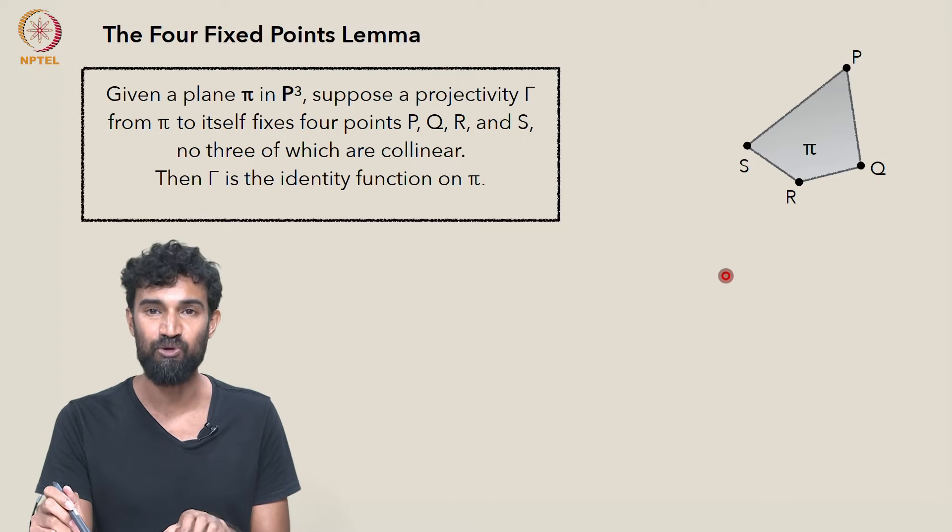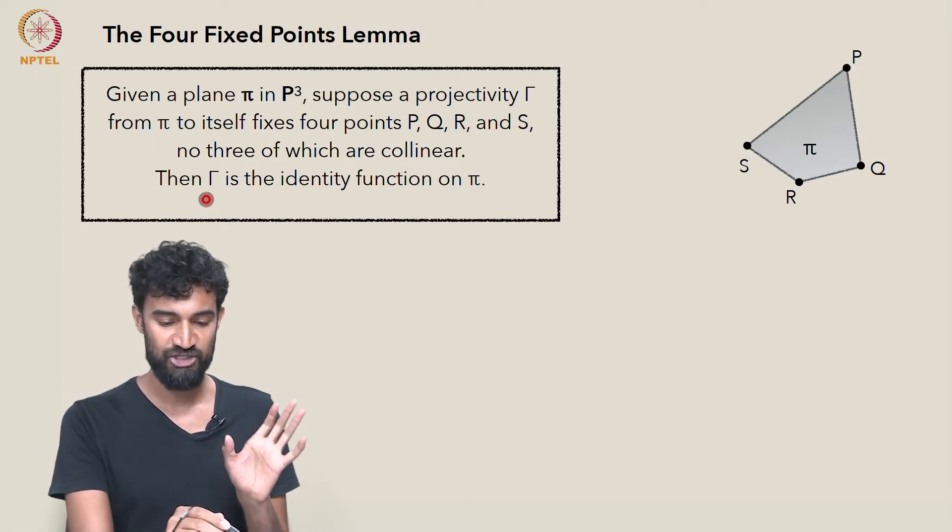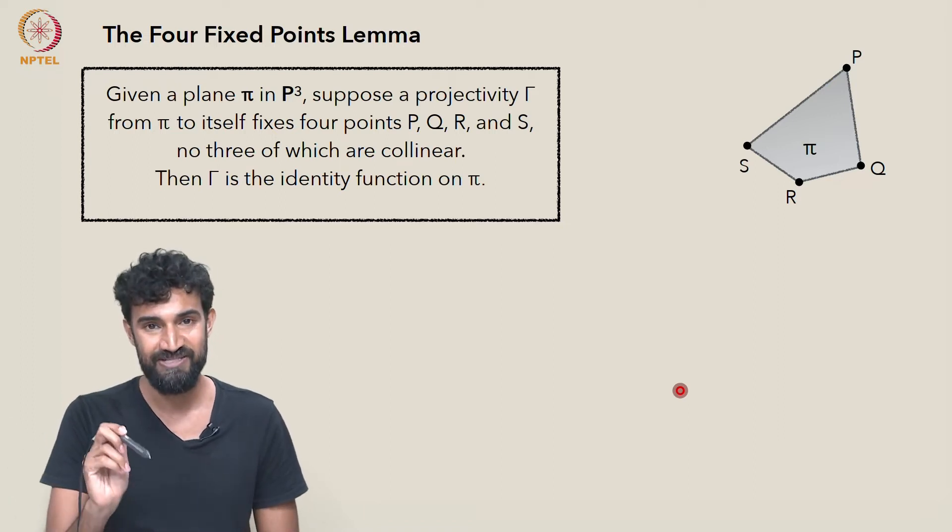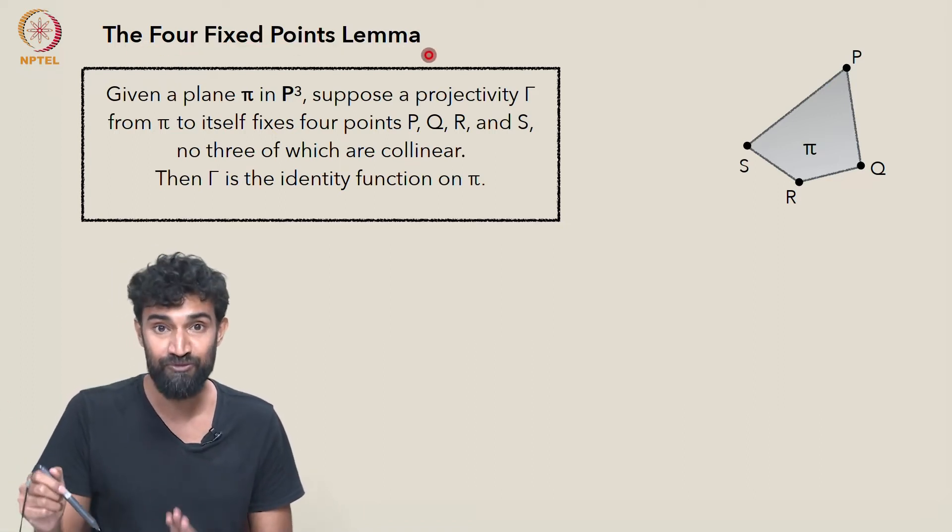Every point is a fixed point for γ if these four points are, and γ is actually the identity function on π. That's what the theorem says. How do we prove it though?